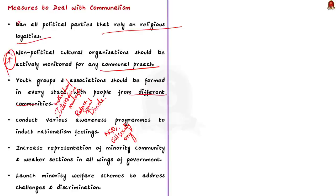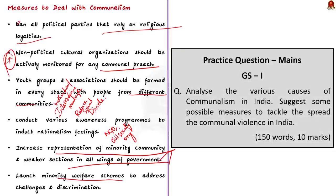Thirdly, the government should conduct various awareness programs with the help of NGOs and civil society organizations to induct the feeling of nationalism into people's minds, helping to unite people from different communities and cultivate values of communal harmony. Fourthly, the government should increase the representation of minority communities and weaker sections in all wings of government, and launch minority welfare schemes to address challenges and discrimination faced by them in jobs, housing, and daily life. This would create belief among the minority community and divert their communal thoughts.